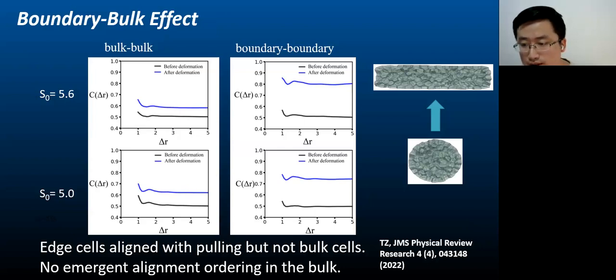We separate the boundary cells from the bulk cells in the system and look for correlation in alignment between cells in the bulk and between cells on the boundary. For the fluid case with target shape index S naught equals 5.6, we found that for bulk cells, the spatial correlation in alignment is rather similar to the bulk system with periodic boundary condition. In other words, we do not observe nematic ordering for the bulk cells.